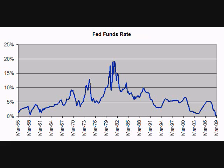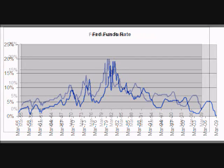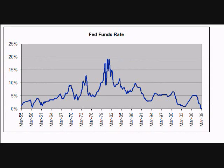The Fed Fund's target rate is the rate that banks charge other banks to borrow money, usually just for overnight, so they can meet reserve requirements. When banks loan out all of their excess money and one of the bank's depositors wants to make a large withdrawal, the banks must borrow money to meet the reserve requirement. They can borrow it from other banks and pay the Fed Fund's rate, or they can borrow it from their Federal Reserve Bank directly and pay the discount rate. Since these loans are for such a short period of time, the Fed Fund's rate is also called the overnight rate.